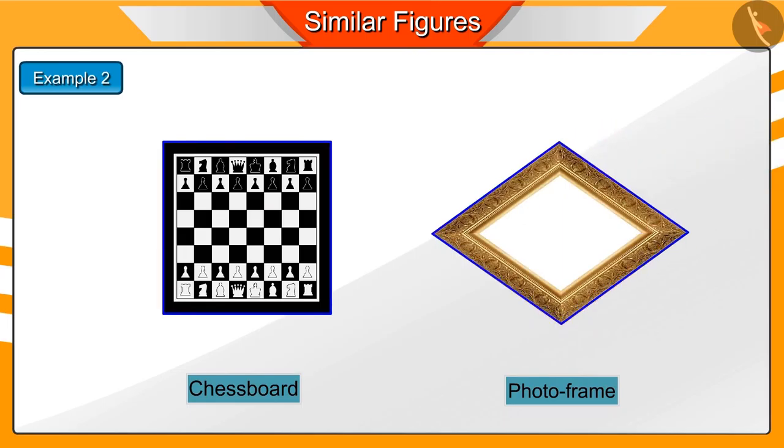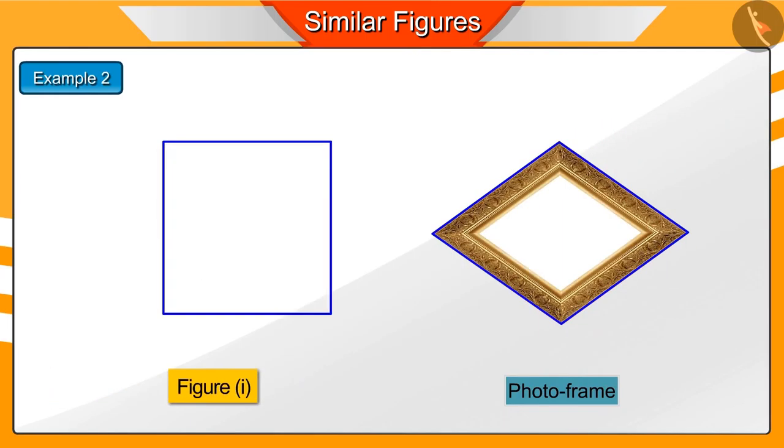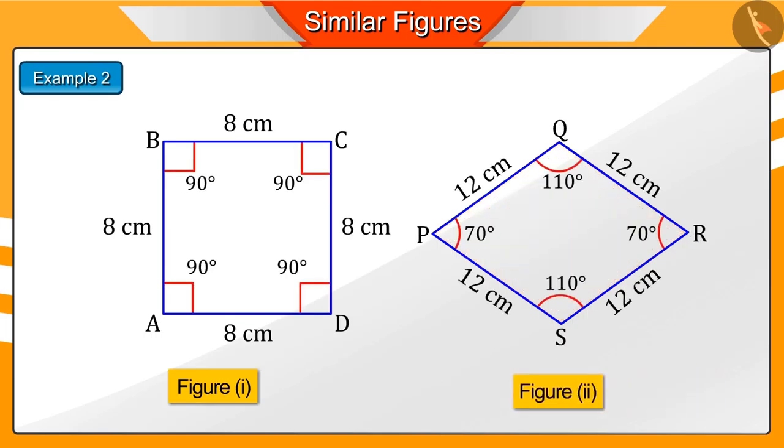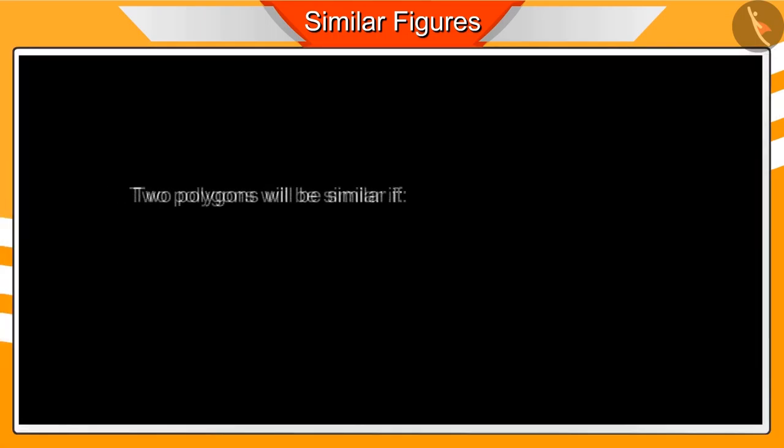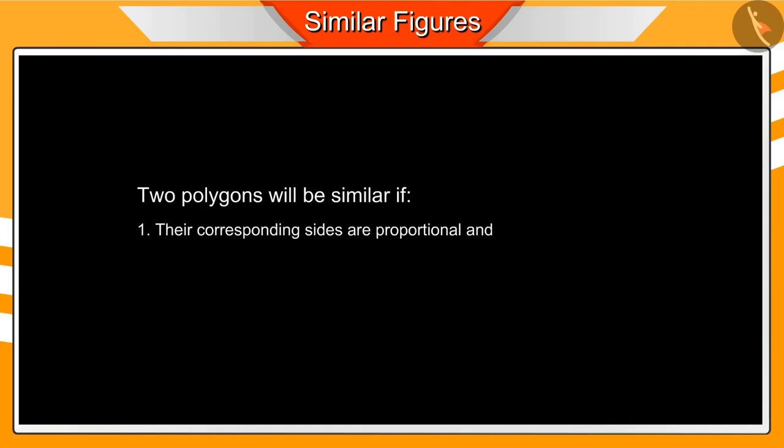Suppose we represent the chess board as figure 1, ABCD, and represent the photo frame as figure 2, PQRS. We can see that the number of sides in both figures is the same. To know if any two figures are similar, we check the ratio of their corresponding sides and the corresponding angles.